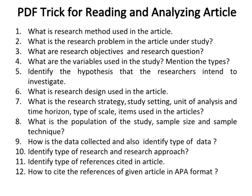PDF trick for reading and analyzing an article: if you know the PDF trick, you can easily find answers to questions for your assignments by pressing Ctrl+F to search for required terms. After pressing Ctrl+F, search for words such as: research method, research technique, research problem, issue, objective, aim, goal, question, variable, hypothesis, sample size, etc. In this way you can find many answers and skim the rest of the article.